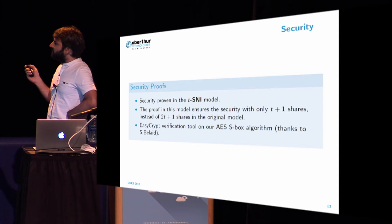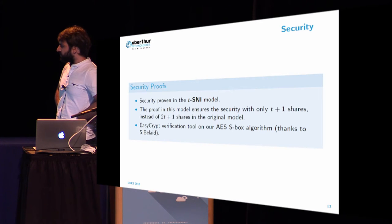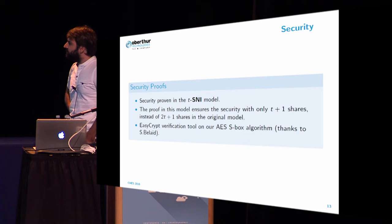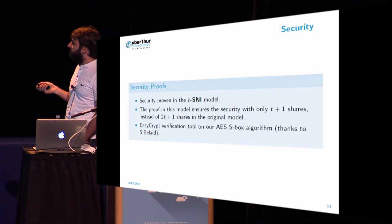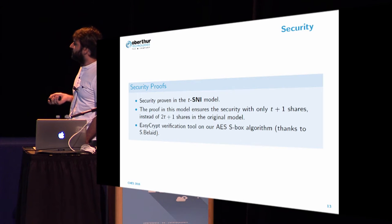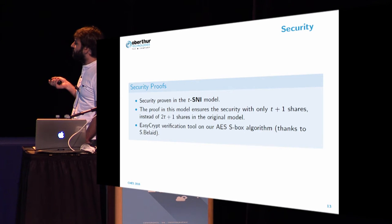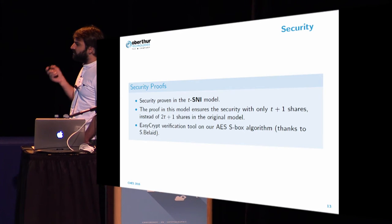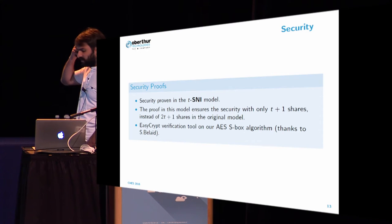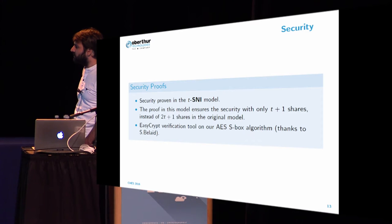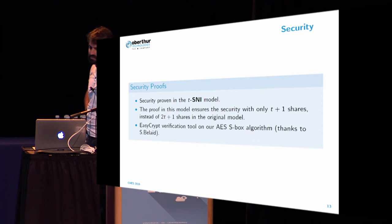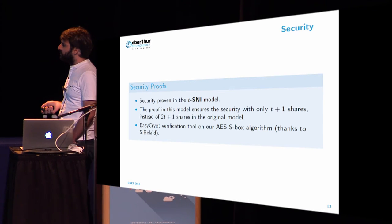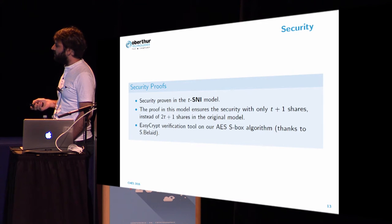The authors made the security proofs for all the algorithms given in the article, and they consider the TSNI model, which is a nice model because it allows to be optimal in the number of shares, whereas the original AISW model requires two T plus one shares. And they also use the verification tool to be sure that there were no leakages in the algorithm.